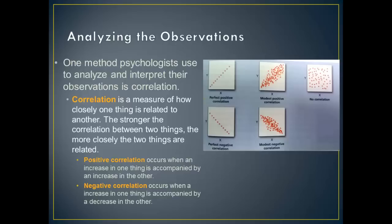Now, how do we analyze these observations? We do that by interpreting observations through correlations. A correlation is a measure of the relationship between two or more variables. A variable is anything that can change or vary — like scores on a test, temperature in a room, or gender. For example, researchers might want to know whether cigarette smoking is connected to life expectancy. Since scientists can't simply wait around to see when smokers die, the only way to find out is to use medical records of people who have already died, looking at how many cigarettes a person smoked per day and the age at death.